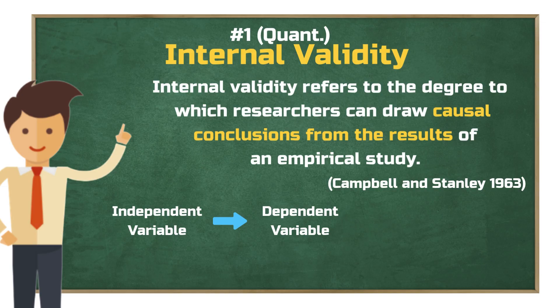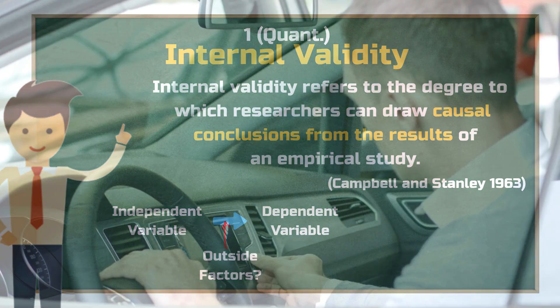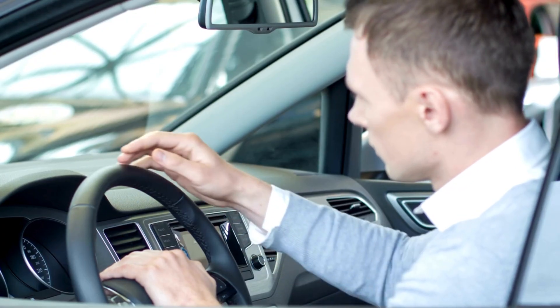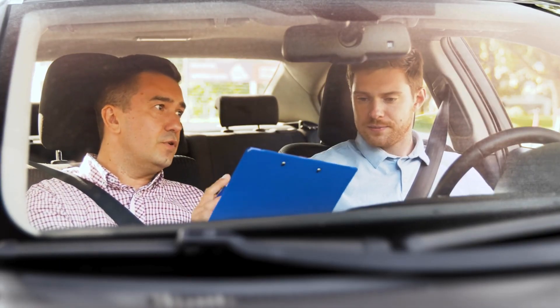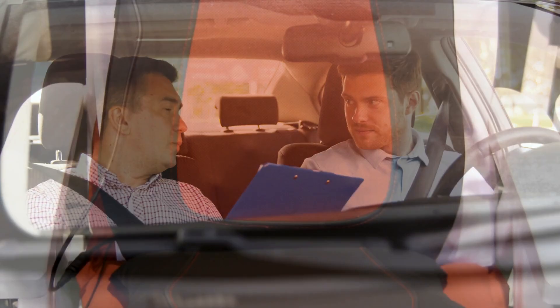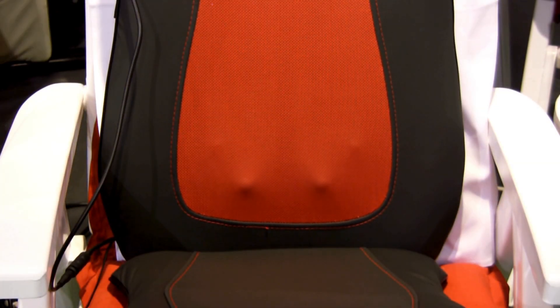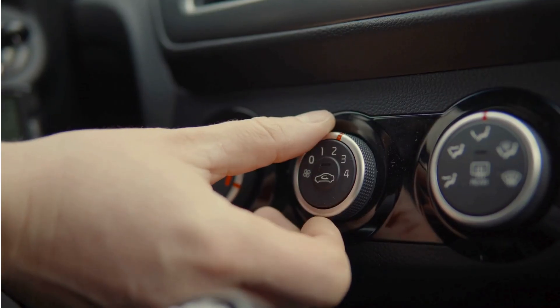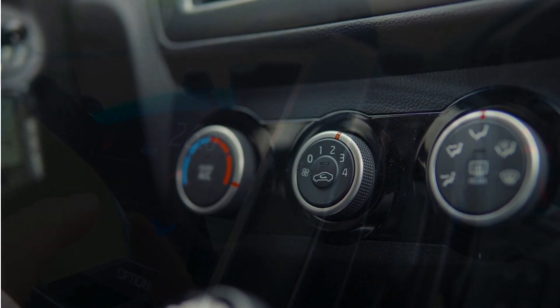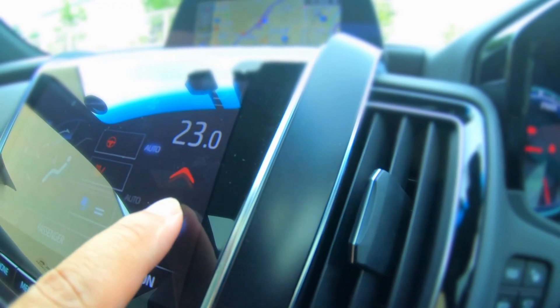But how do we know that? Mainly by ruling out other explanations. Are there any outside factors that might have influenced the results — anything that could have caused the change, even without us manipulating the independent variable? In other words, are there any confounding variables that muddy the waters? Here's an example: let's say we run an experiment where we adjust the temperature inside a car and ask people how comfortable they feel. Temperature is our independent variable; comfort is the dependent one. Now if the car's seat massage function is on, that's a problem — people might feel more comfortable not because it's warm, but because they're getting a massage. That doesn't mean temperature has no effect, but it makes it harder to isolate. So internal validity is all about reducing or eliminating the influence of confounding variables.